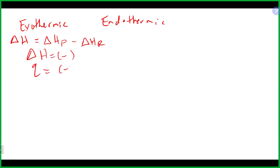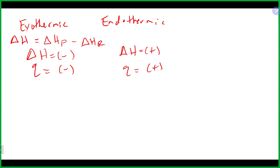Also, Q will be a negative number for exothermic. And if delta H is positive, that's endothermic. Positive values for energy imply that overall things are absorbing energy and it's an endothermic process. Negative values when you calculate energy will result in a negative delta H, and that's usually an exothermic process where energy is being released.